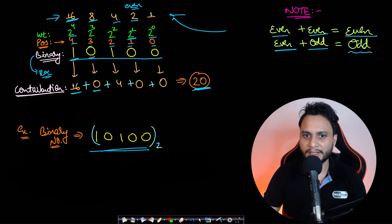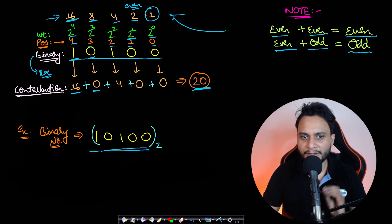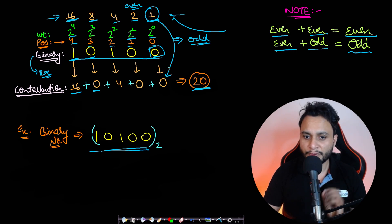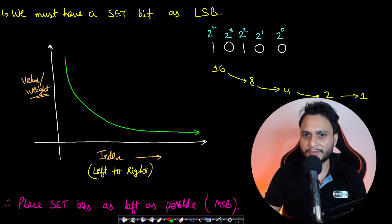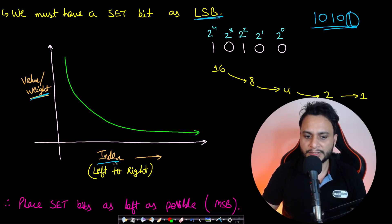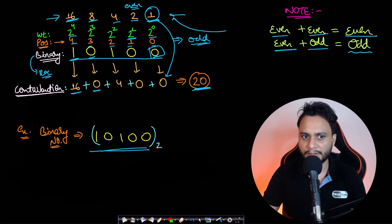In the entire weightage, there is only one odd number — 2 to the power 0, which is 1. Every other power of 2 is even. Therefore, to guarantee that the number you generate is odd, the weight at position 0 must be contributing. This means we need a set bit at the least significant digit. Once we know we must have a set bit at the LSB, what about the rest of the bits in something like 10101?